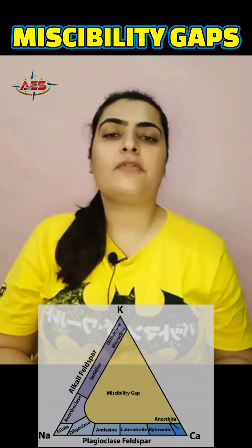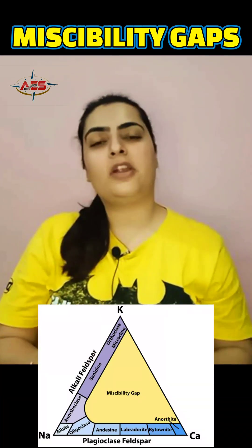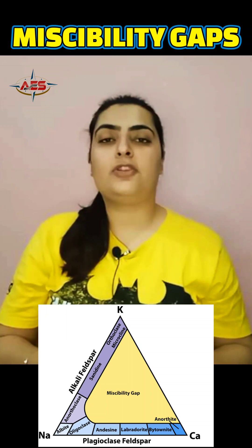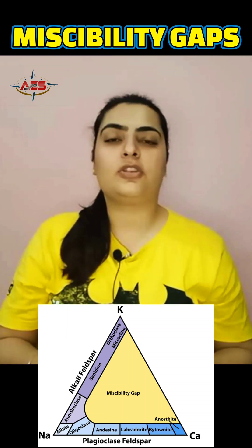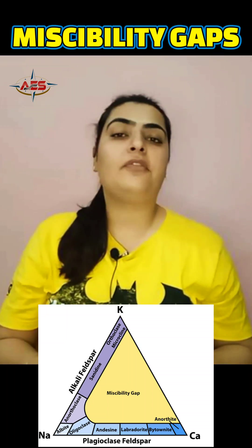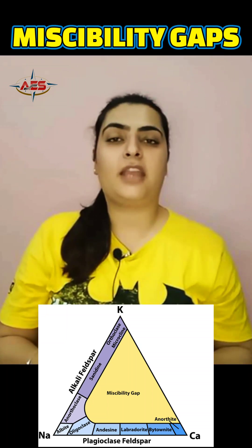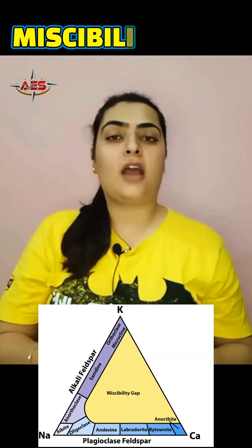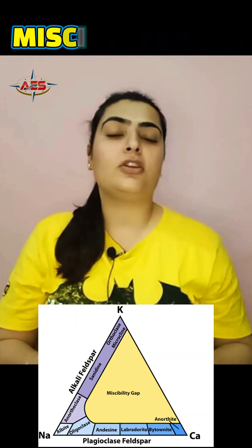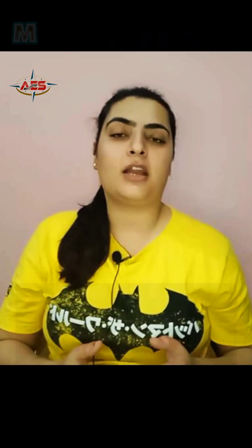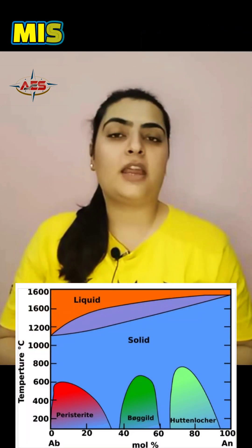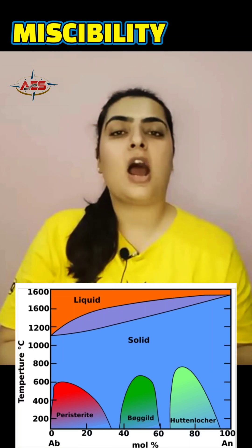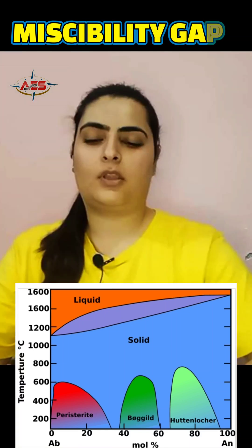Such exsolution structures are very common in the feldspar group of minerals. In the plagioclase solid solution series, we have three miscibility gaps which produce exsolution textures. In increasing order of anorthite content, they are: the peristerite region, then the Bøggild intergrowth, and then the Huttenlocher intergrowth.